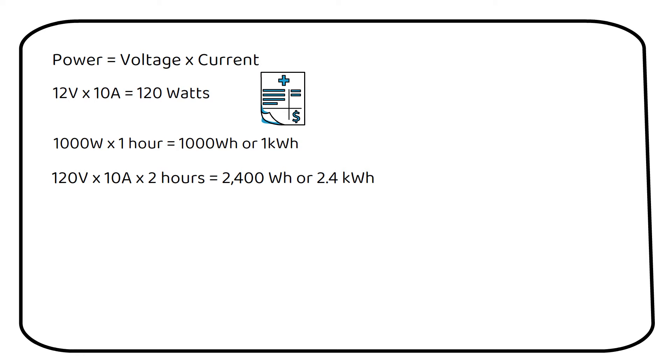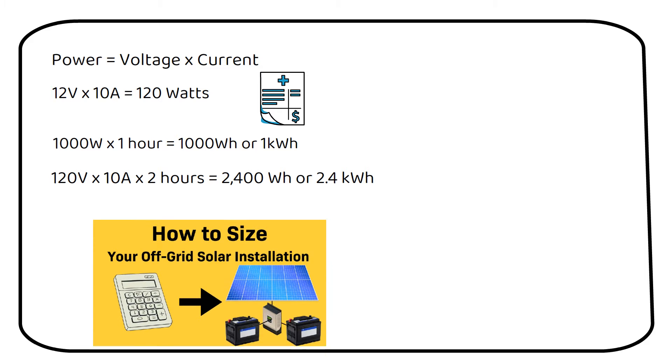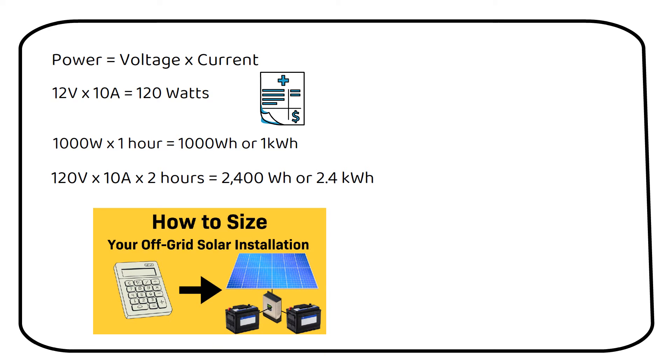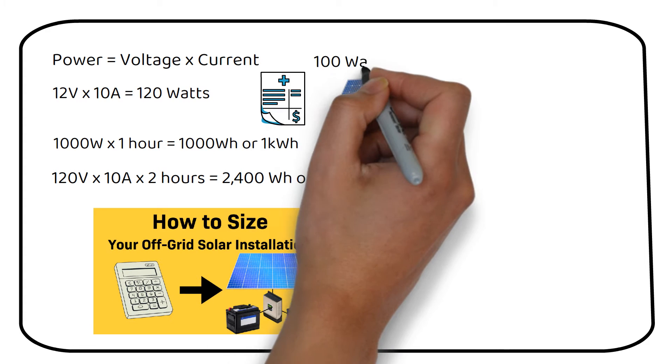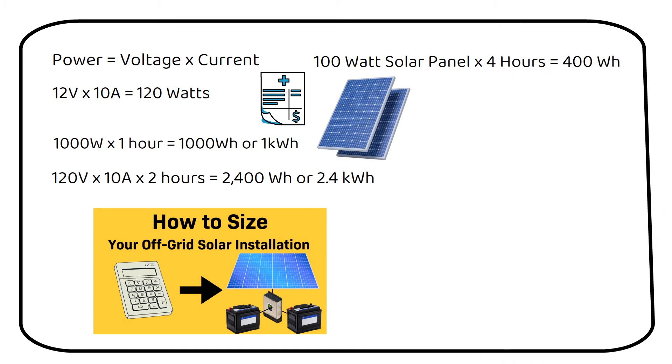We use this formula when we do load calculation to size our off-grid solar system. Check my video about it later. If your solar panel is 100 watts and you have 4 sun hours per day, your solar panel can produce 400 watt-hours.